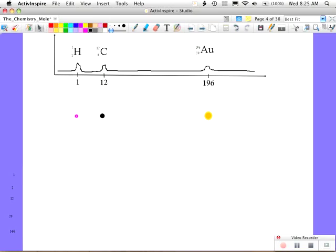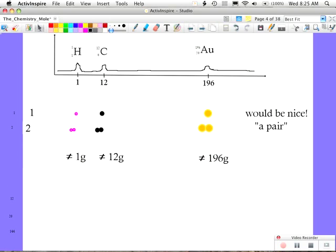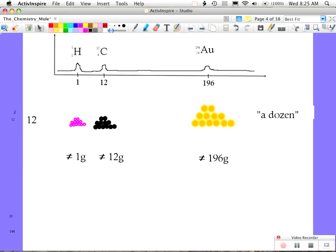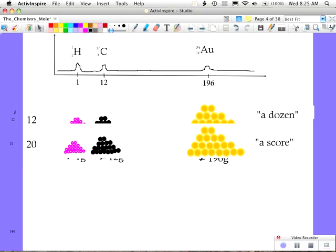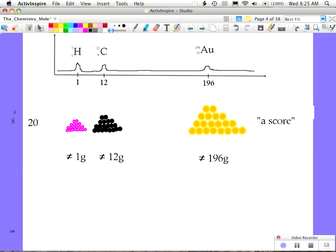Well, that doesn't work. Unfortunately, they don't weigh in grams. One hydrogen doesn't weigh a gram, one carbon atom doesn't weigh 12 grams, and one gold atom doesn't weigh 196 grams. What if we take more than that? What if we took two? We call that a pair of atoms, but that still doesn't work. What if we take 12? We call that a dozen, but a dozen atoms of hydrogen is nowhere near a gram. What if it was 20 that was the magic number, and we had 20 atoms of hydrogen weigh a gram?